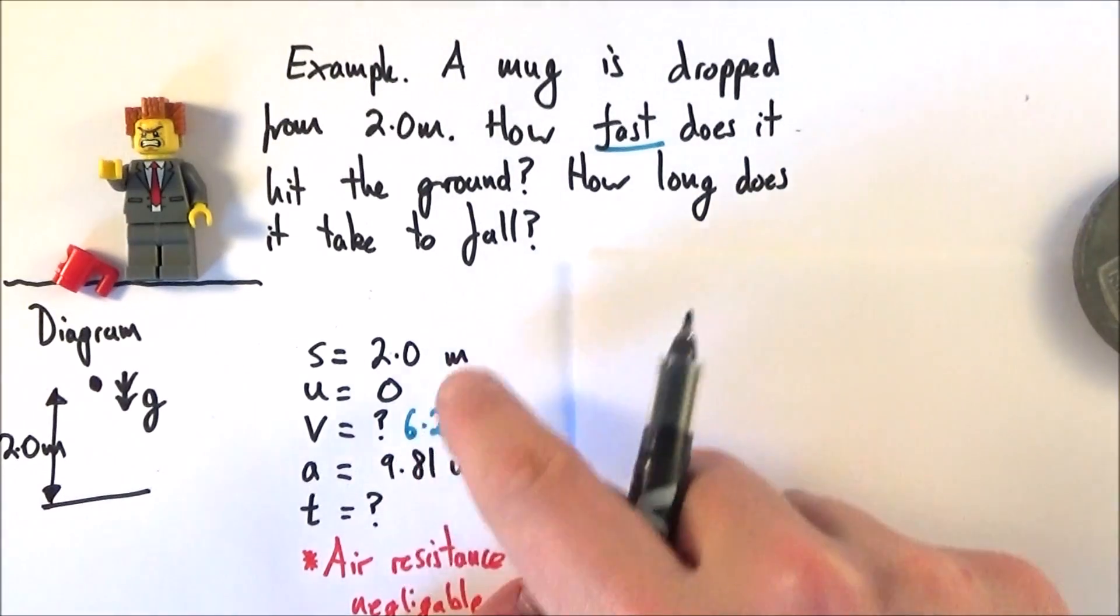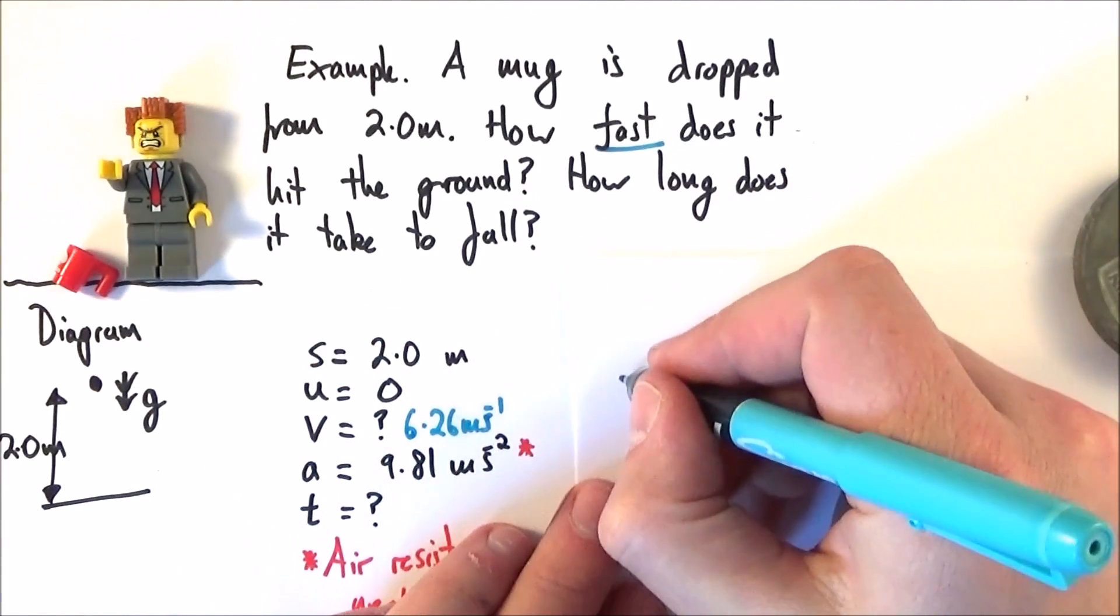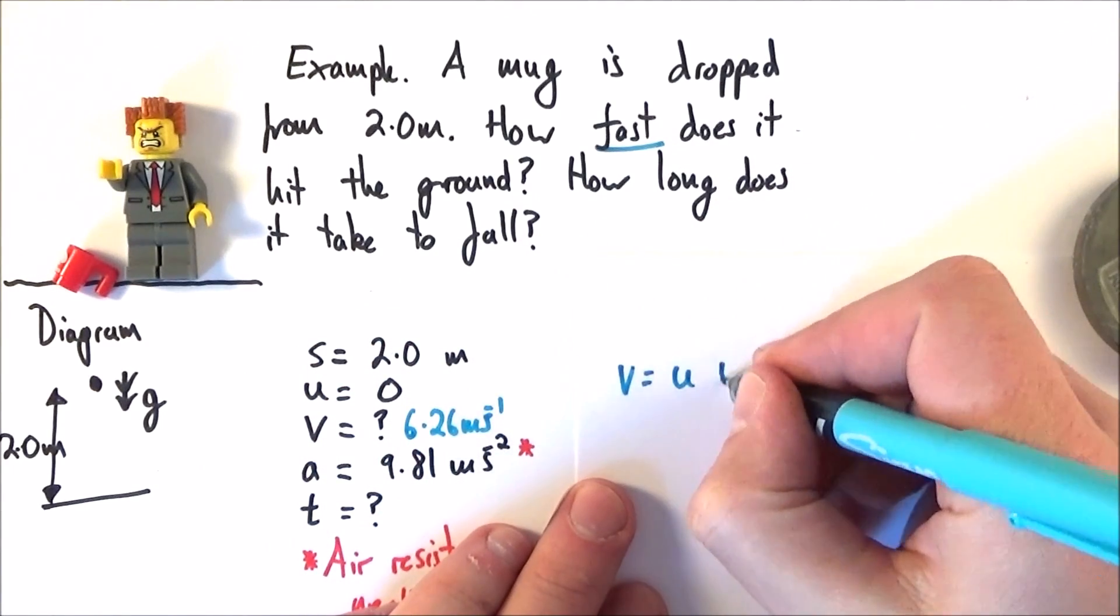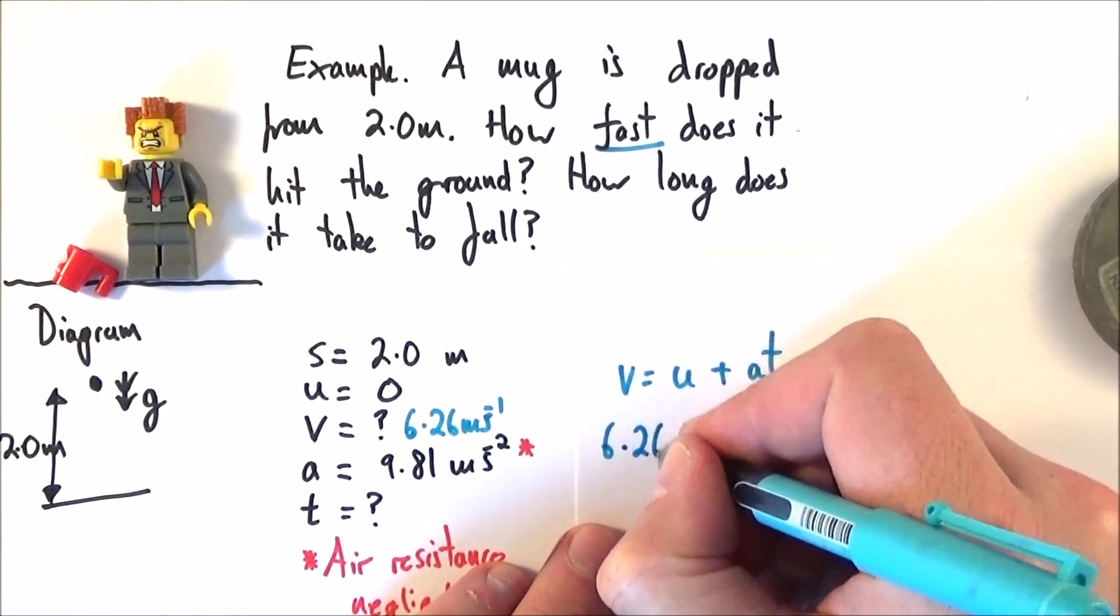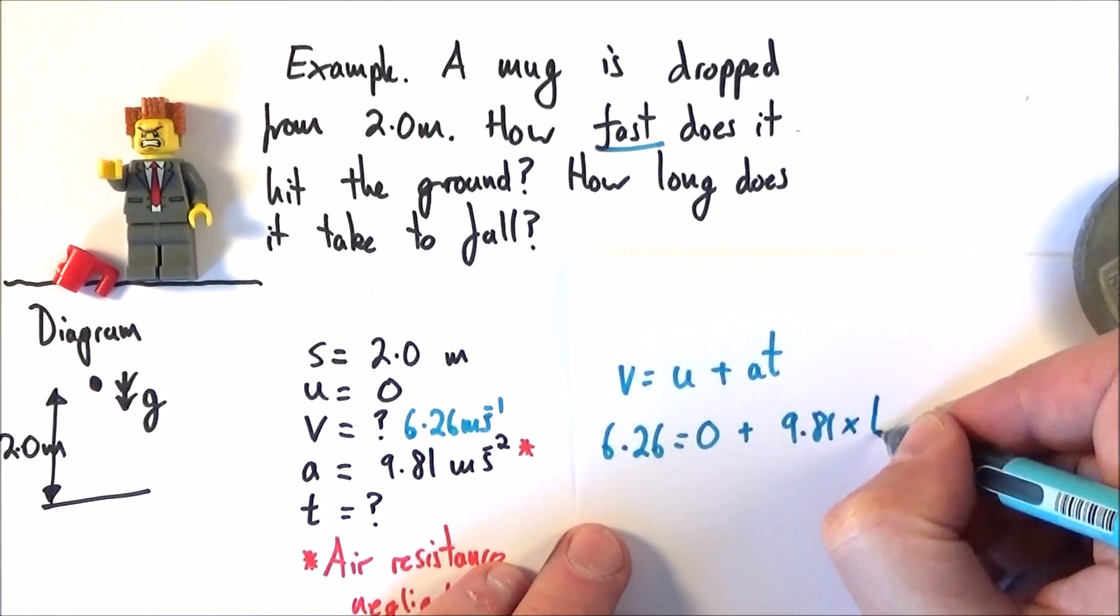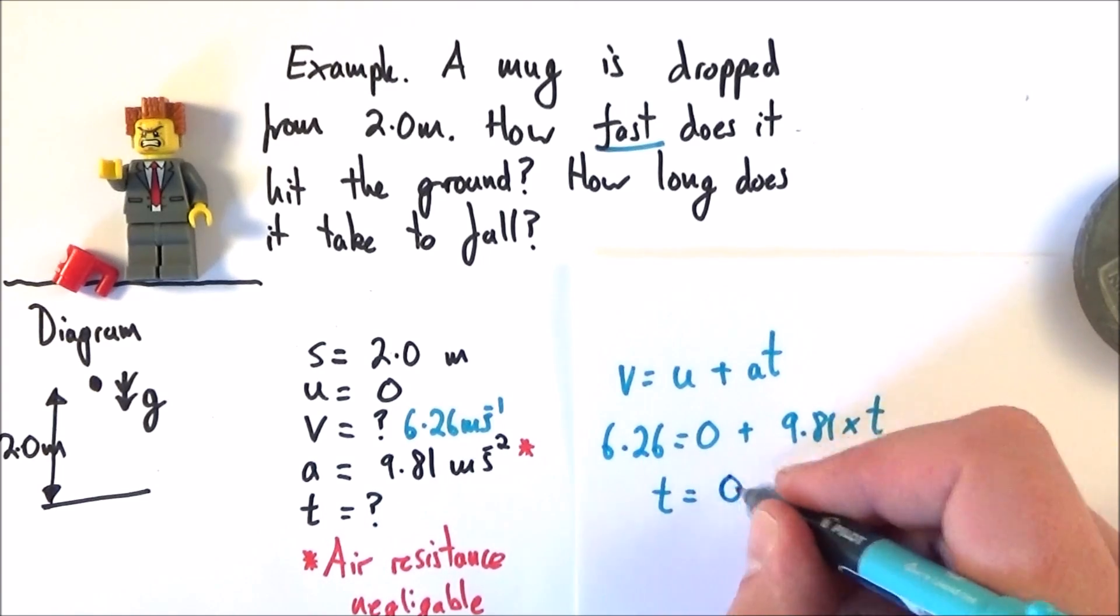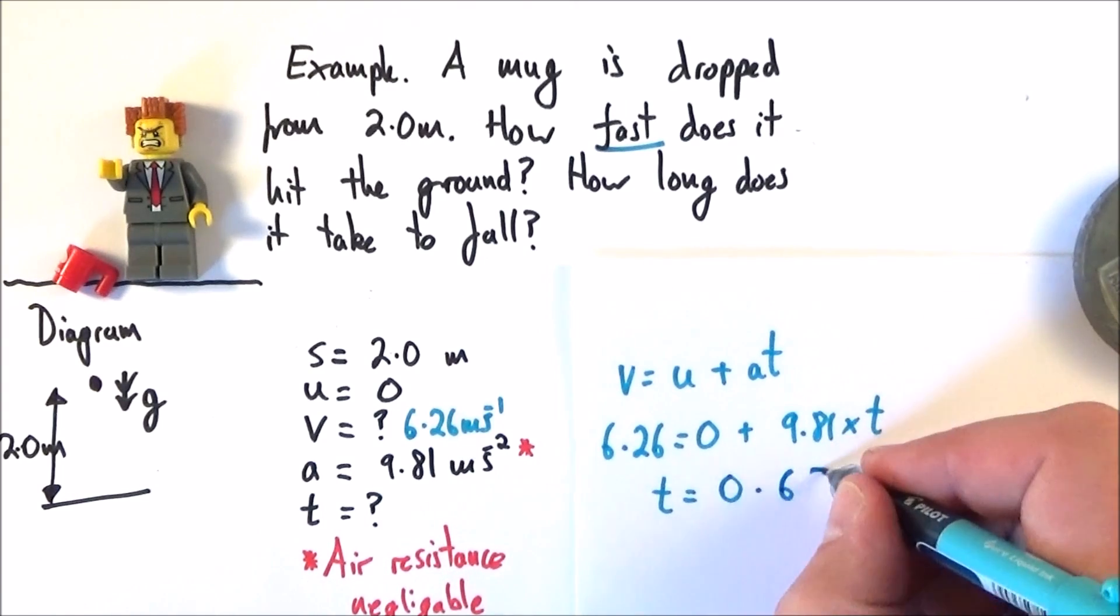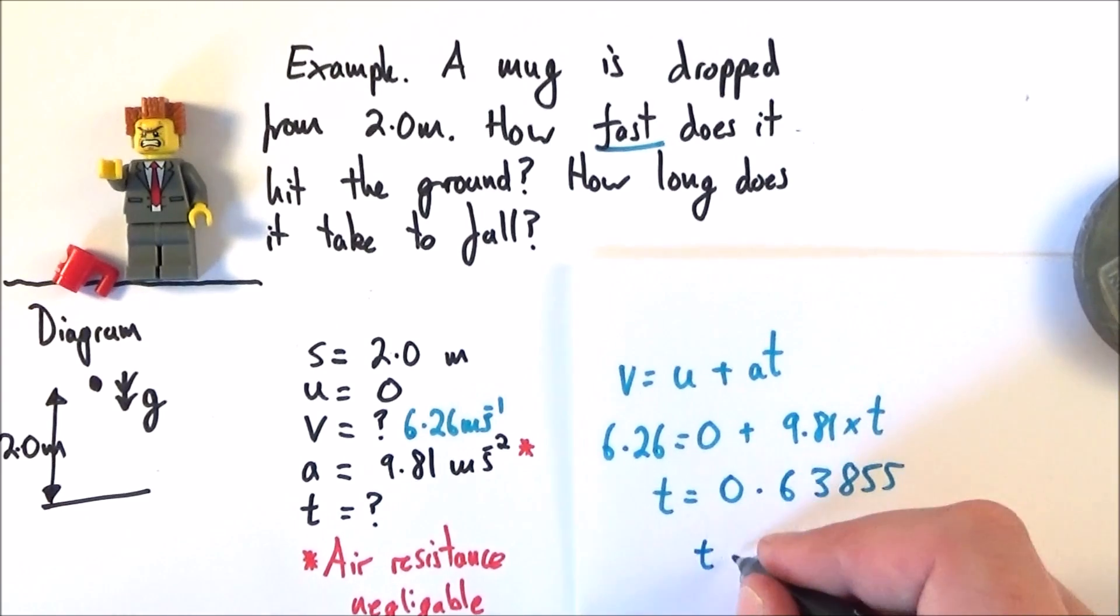When it comes to working out the time, I could use any of the SUVAT equations, so I've got four knowns and one unknown. The one I'm going to use is that v is equal to u plus at. So we now know the final velocity, 6.26, and that's equal to 0 plus 9.81 multiplied by t. When I rearrange all of this and I do some calculations, I can find that the time taken is about 0.63855 seconds, which again, to three significant figures, is equal to 0.639 seconds.